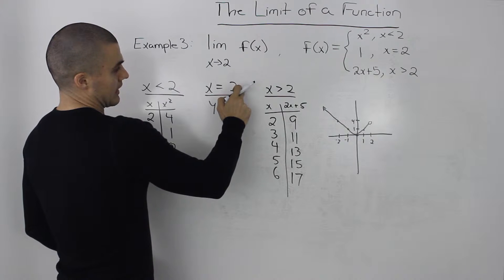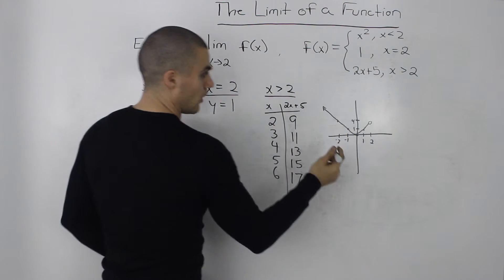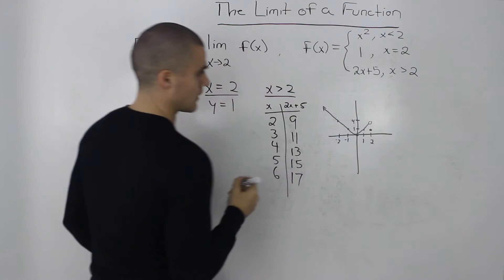So this is just a parabola that just keeps going like that. And then for an x value of 2, y is defined as 1. So at 2 we'll just have a dot at 1.